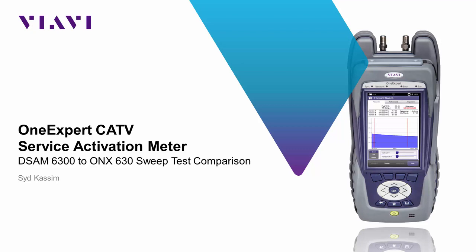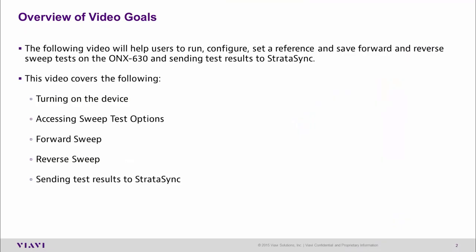Welcome to this VRV video designed to help you transition from the DSIM 6300 Sweep Tester to the new ONX 630 Sweep Tester. This short video will highlight key points such as how to turn on the device, how to access the sweep test options, how to run a forward sweep, how to run a reverse sweep, and finally how to send test results into Stratasync.